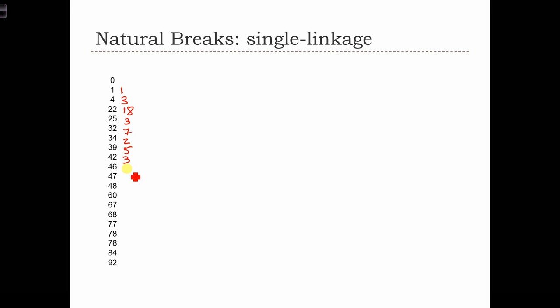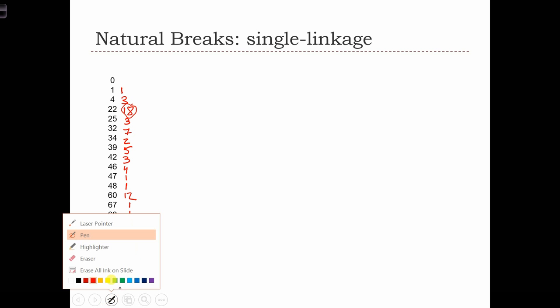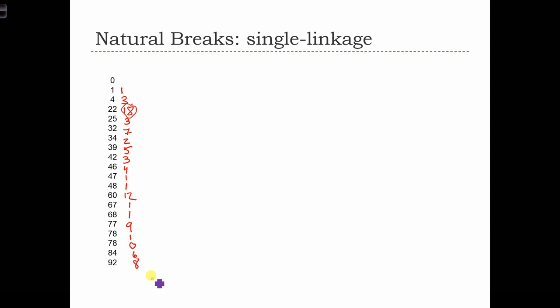So let's do it. All I'm doing is writing down the difference between each number and the number above it. And now we need to identify the largest difference in this list. And the largest one here is 18. 18 is the difference between 4 and 22. So we're going to make our first break point between 4 and 22.